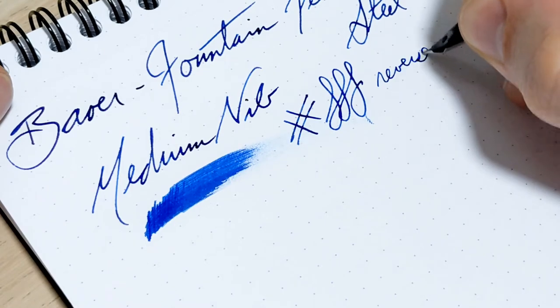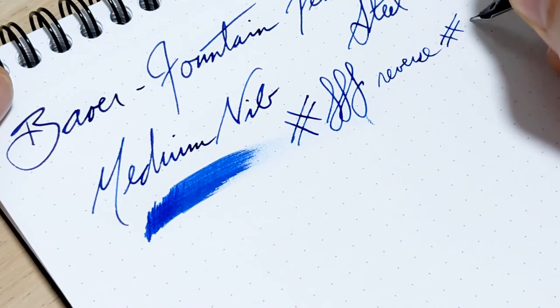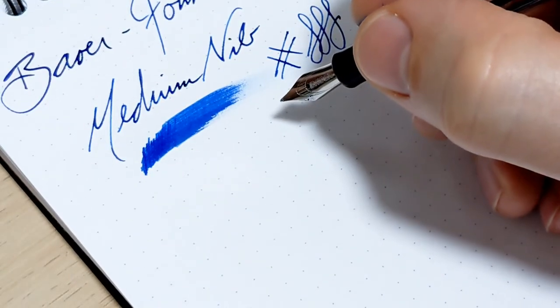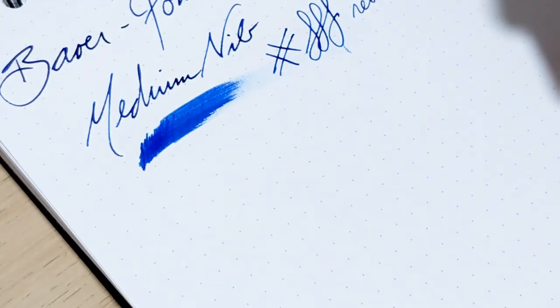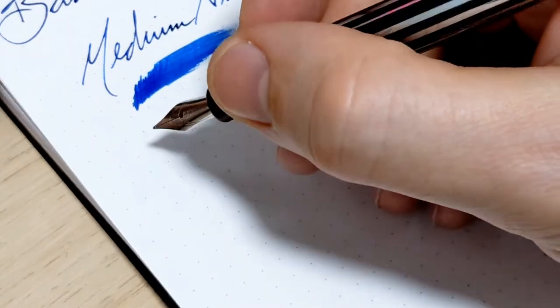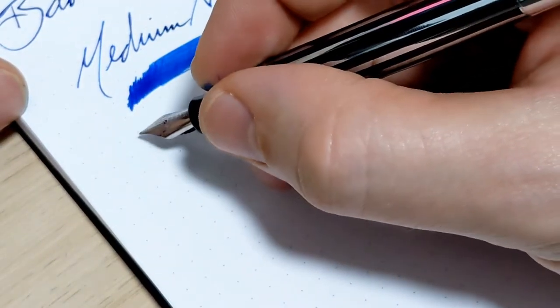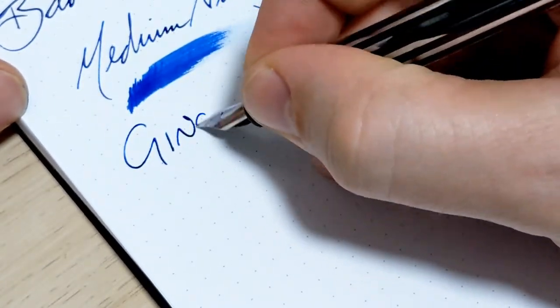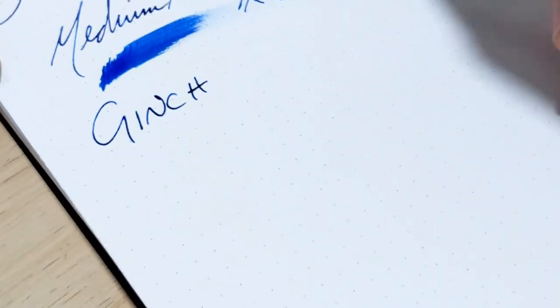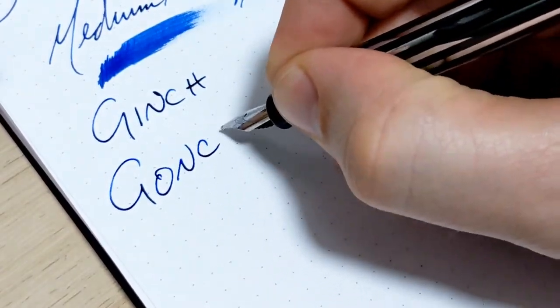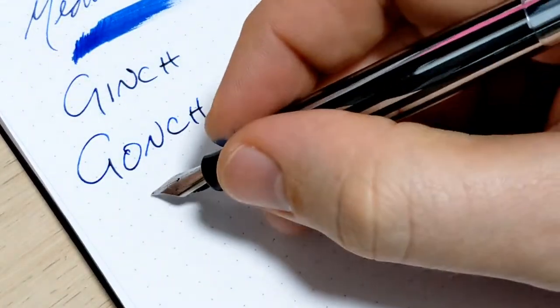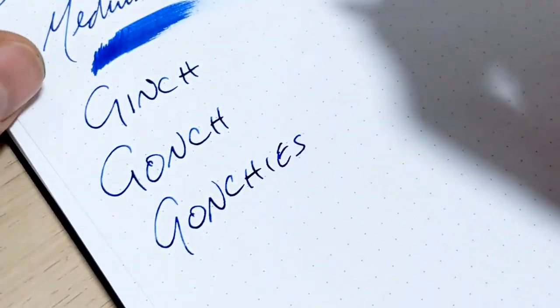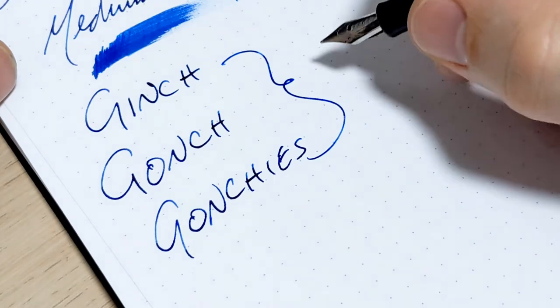And oh, let's do another Canadian language lesson. The word of today, let's see. Okay, let's do this one: ginch, or also gaunch. The plural is gaunchies. All mean underwear.